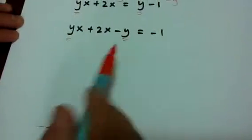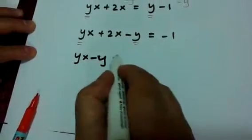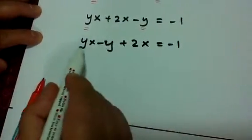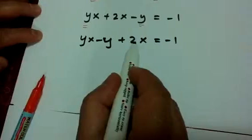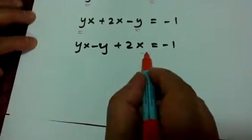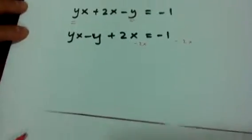Good. Now remember, we need the y here. So let's put them together. yx minus y plus 2x equal minus 1. Since we are solving for y, we don't need this term on this side. We need it on the other side. So how do we do it? Minus 2x minus 2x.